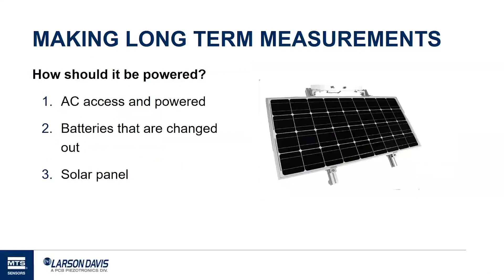Now that you have a better picture of what you're looking for, you need to think about power. Do you have access to AC? Are you okay changing out AA batteries or 12 volt? Or do you want a solar-powered system — a self-contained power source? Some people don't mind keeping a set of batteries and switching them out, while others don't want to be chasing a voltage level. We have customers that will run an AC line to the system, while others prefer the solar panel so it is more mobile or self-contained.